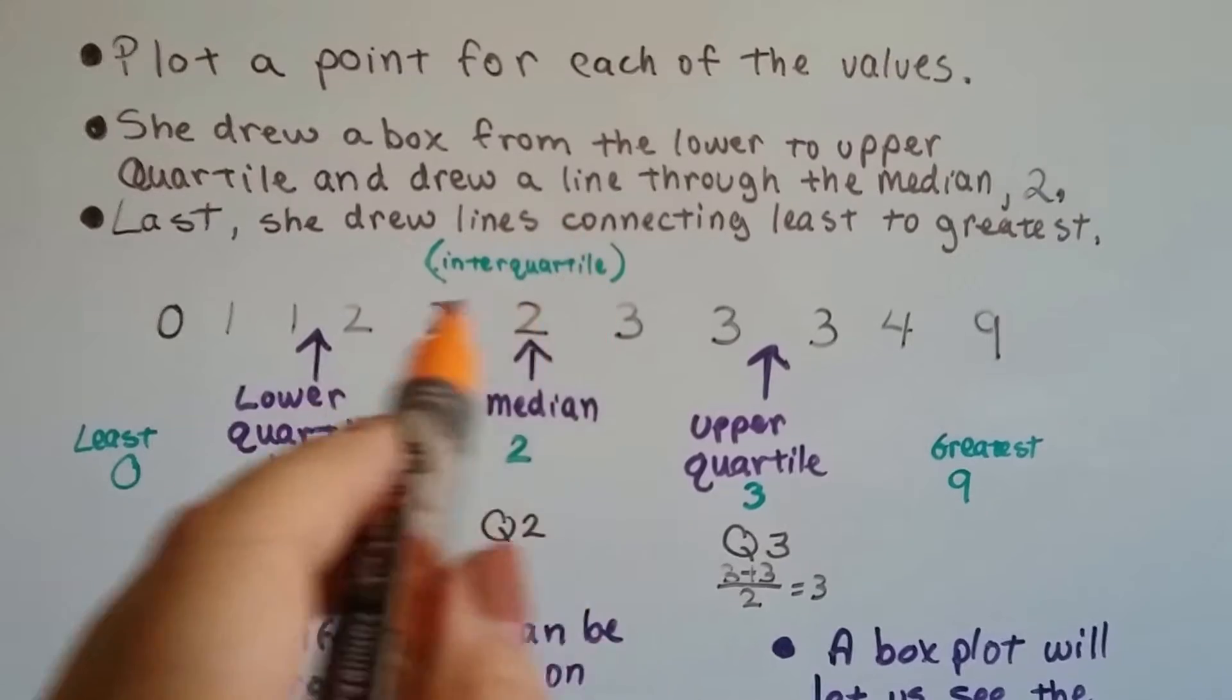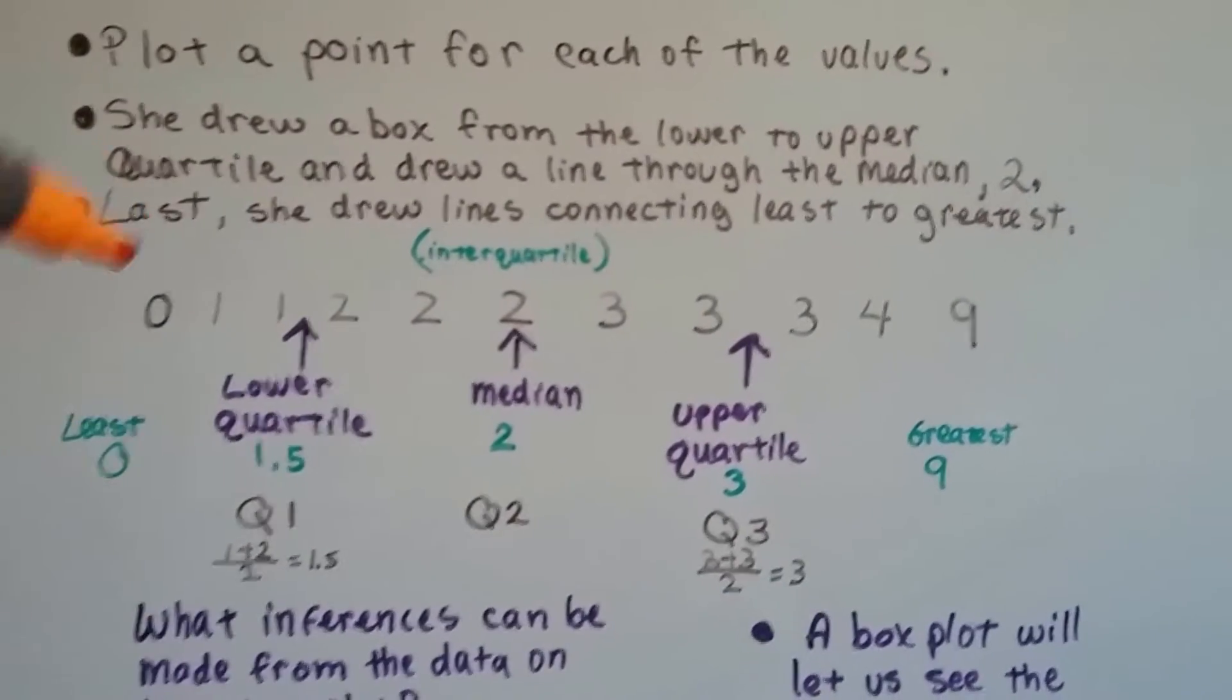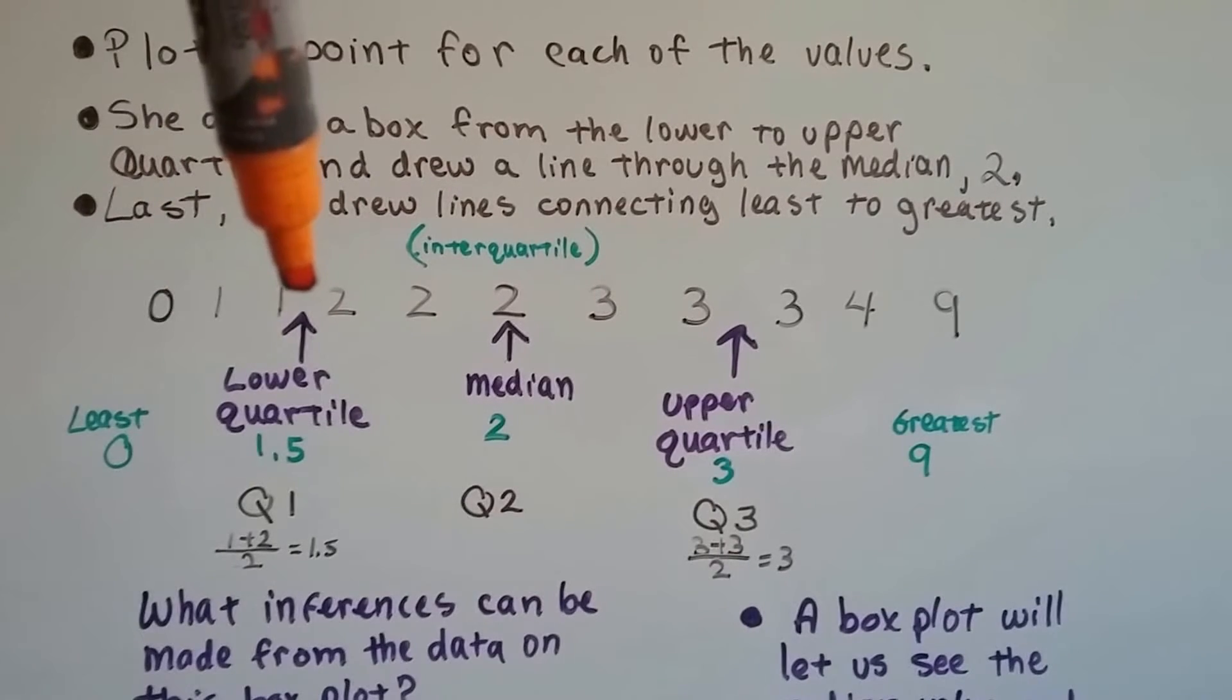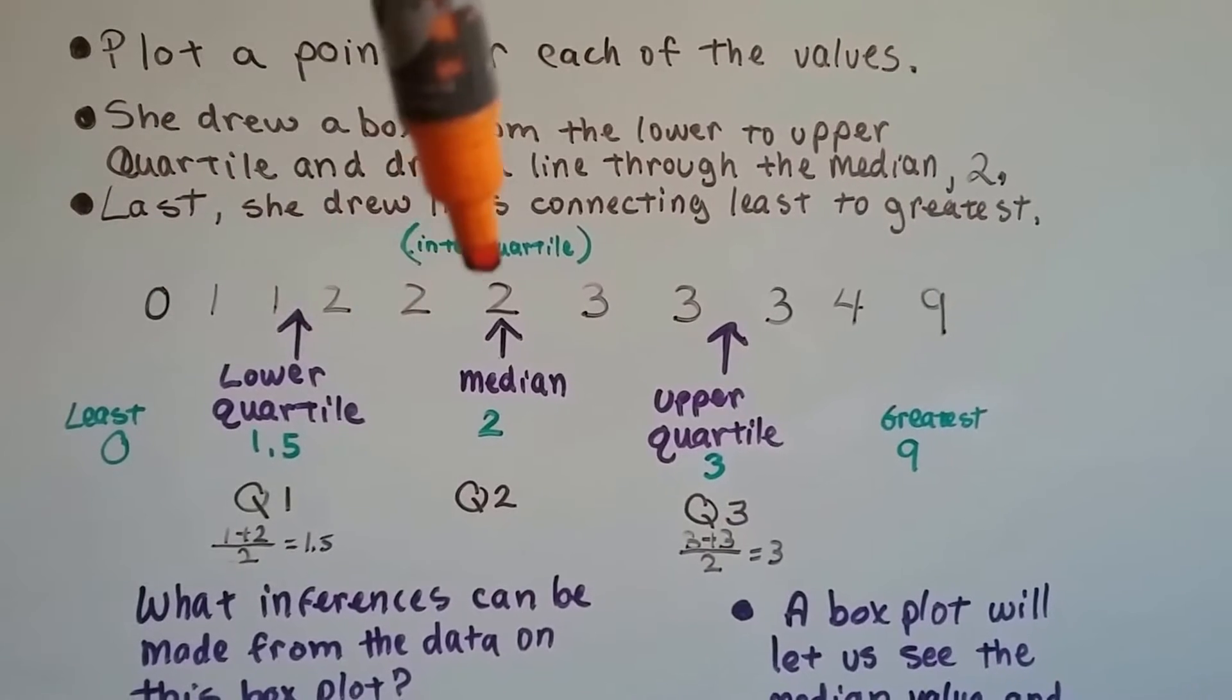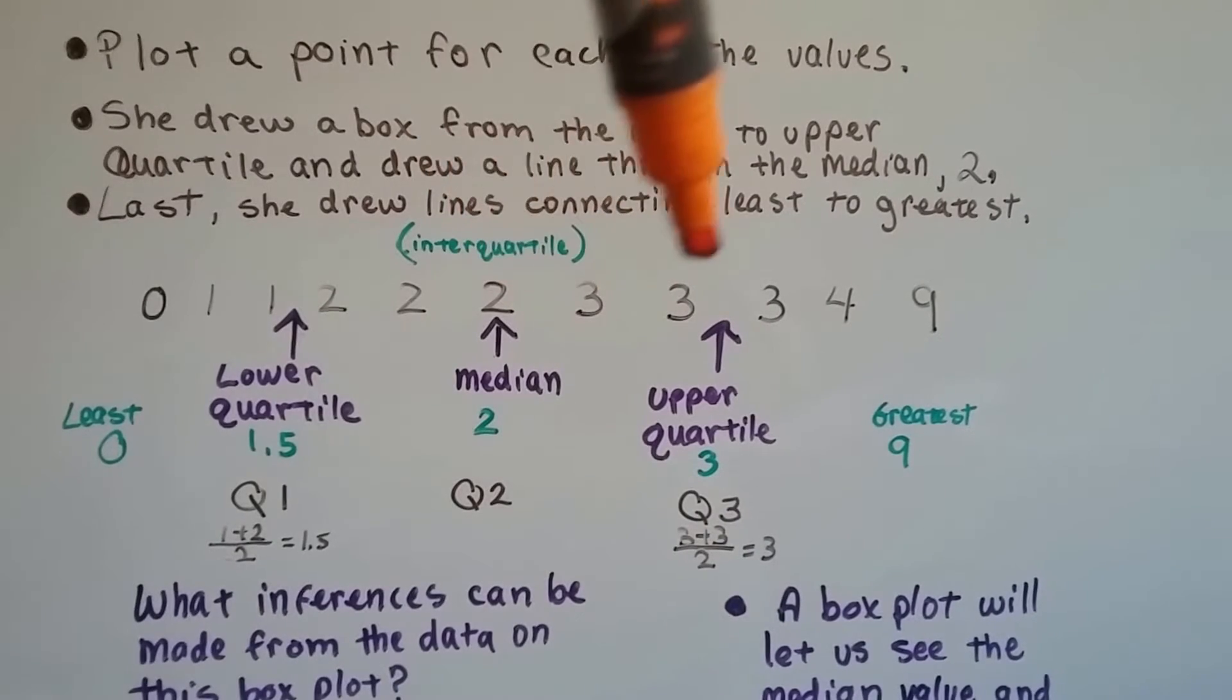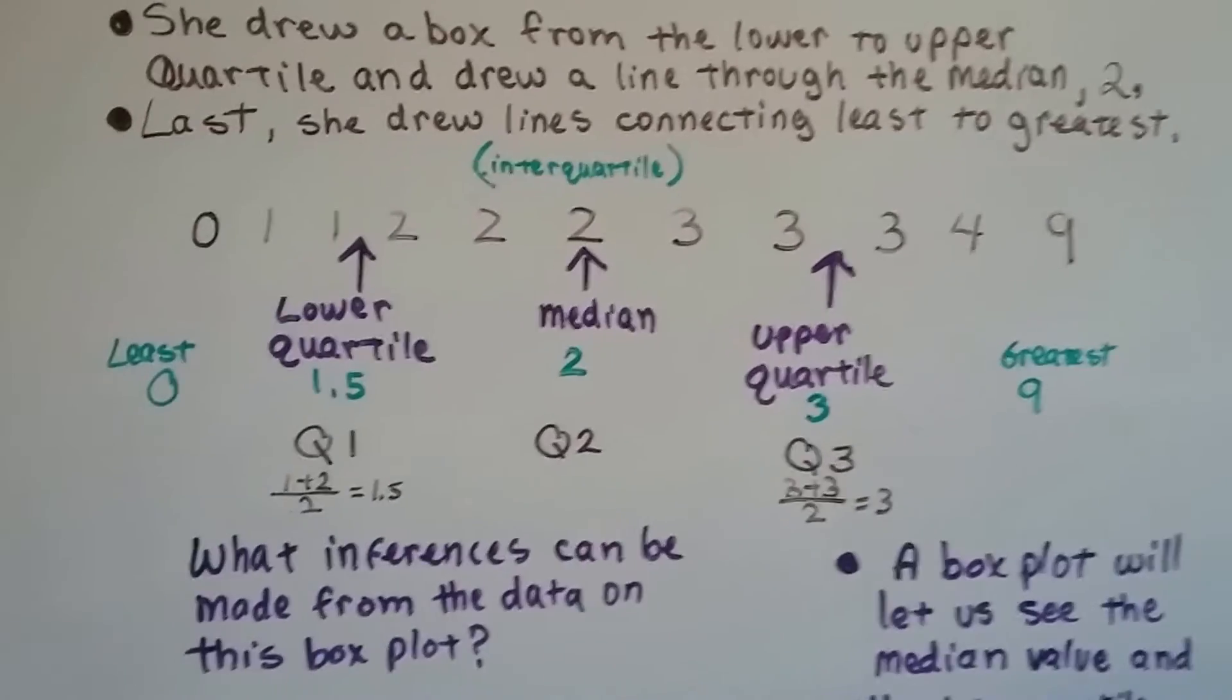So the interquartile range is right here, right around the median. Because there's 12 numbers, she split it here, the lower quartile, in between this 1 and 2. The median is 2. That's the sixth digit, right in the middle. And then the upper quartile got split between these two 3s. And this is how it's done.